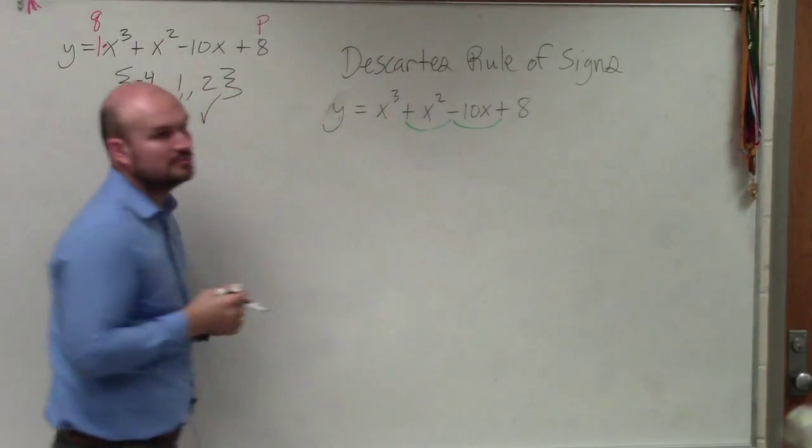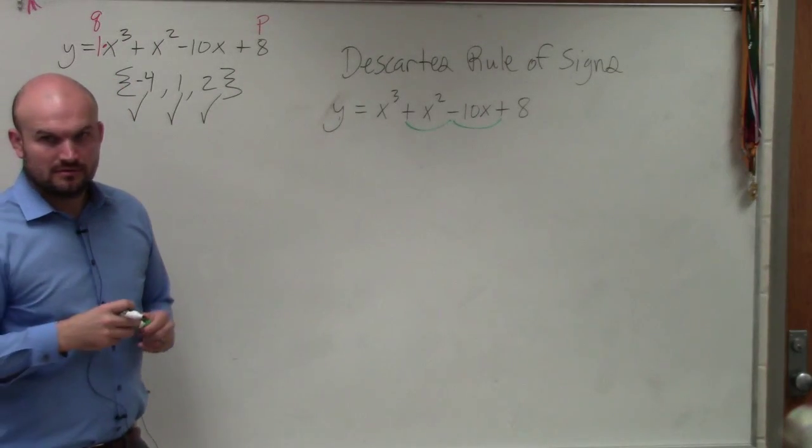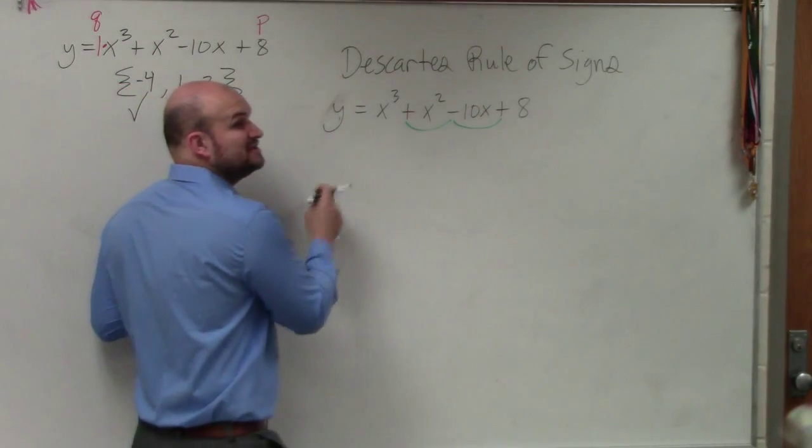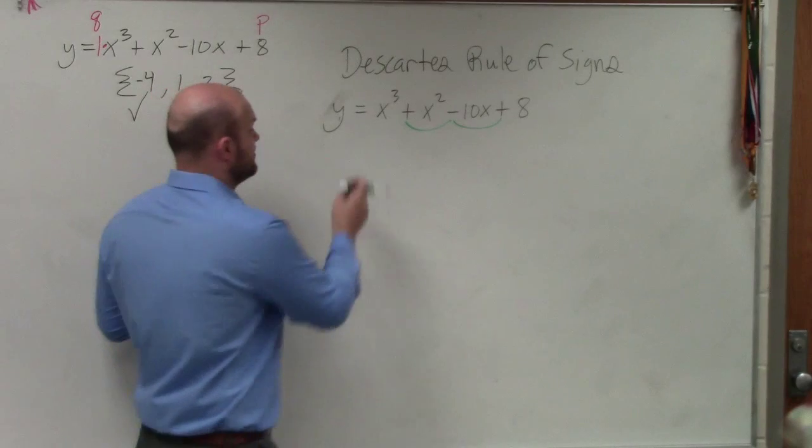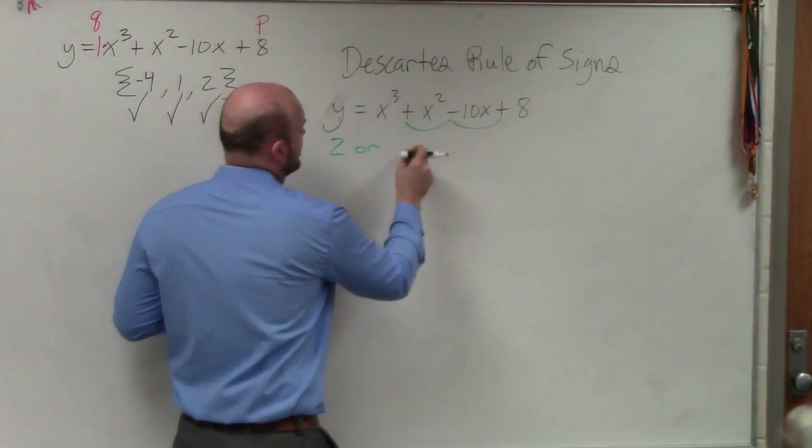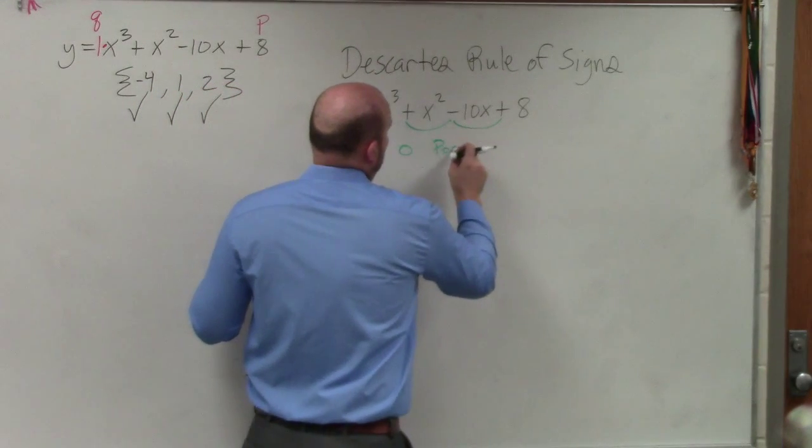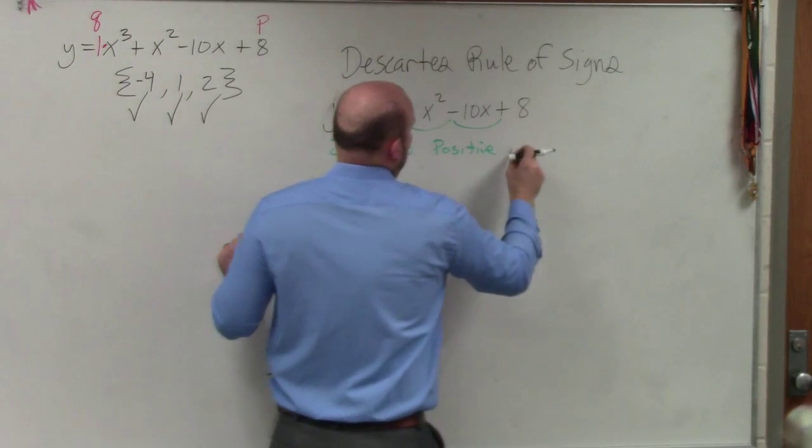One, two. Does everybody see that? Yes? So what you do is you take that number and you subtract an even number. So it's two or zero positive real zeros.